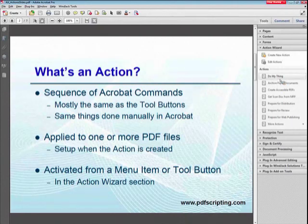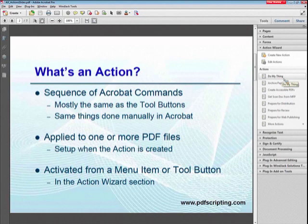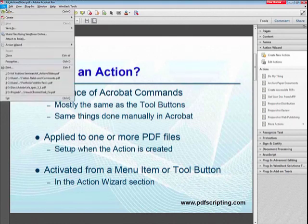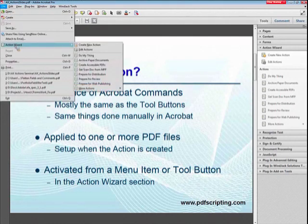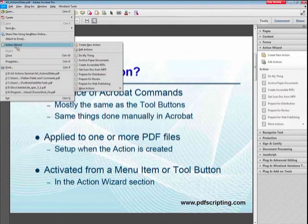Notice the one on the top here — Do My Thing. That's a custom action that I created for myself. That's really what we're going to be talking about: creating the actions to do your thing. Actions are also available on the File menu. There's an Action Wizard submenu that has exactly the same items on it that are on the Action Wizard tool pane — they're identical. You can access the actions from either location.